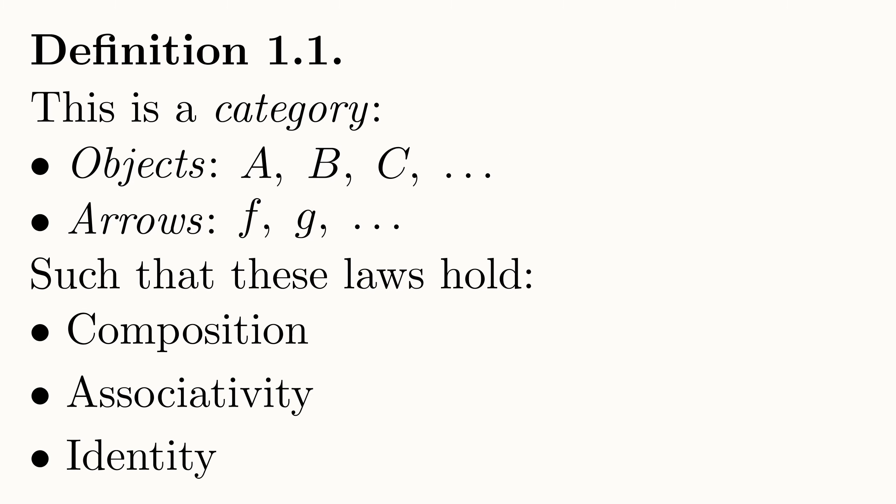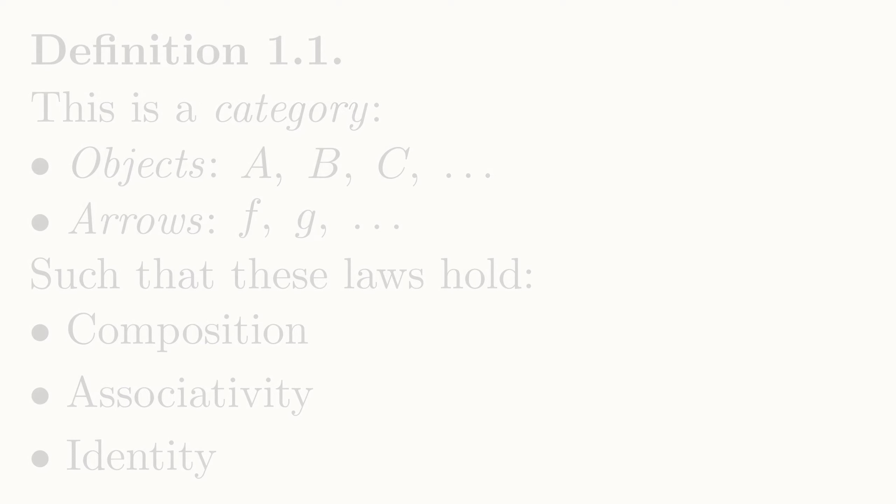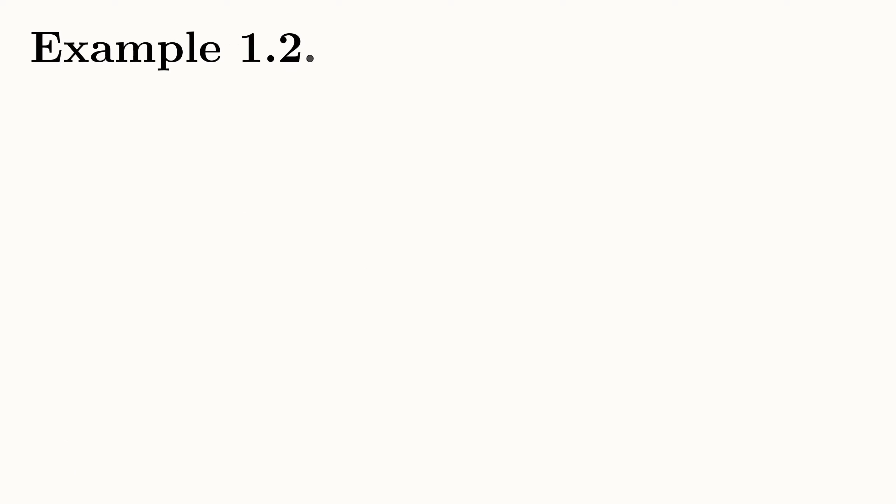In the last lecture, I gave an extremely brief overview of some examples of categories. But now that we have a solid understanding of how a category is defined, let's have a look at a few examples again, this time paying attention to how they satisfy our definition. To start with, let's have a look at the category of sets and functions, which is often called Set. In Set, our objects are sets.